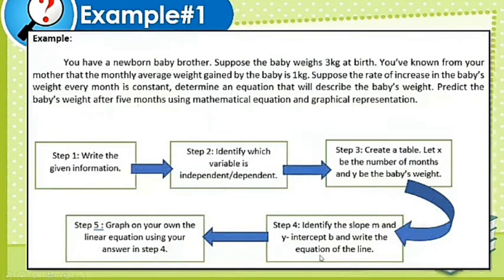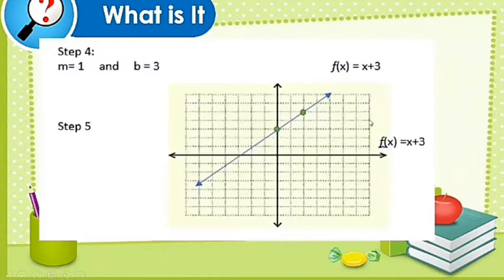Step 4: Identify the slope M and Y intercept B and write the equation of the line. So the slope is 1, and that's the average weight, the baby's monthly average weight. And then B is our Y intercept. Because at birth or zero months, the weight is already 3. So our equation or function is f(x) = x + 3.